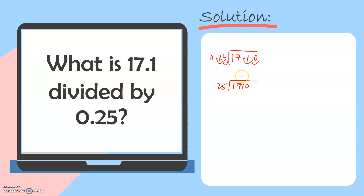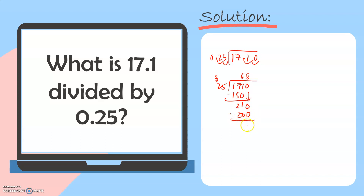Let's solve. 171 divided by 25 is 6. 6 times 5 is 30. 6 times 2 is 12, plus 3, that's 15. Then 1 minus 0 is 1, 7 minus 5 is 2, and 1 minus 1 is 0. Then we bring down the next digit. 210 divided by 25 is equal to 8. 8 times 5 is 40. 8 times 2 is 16, plus 4, that's 20. Then 210 minus 200 is equal to 10. We have here our remainder.